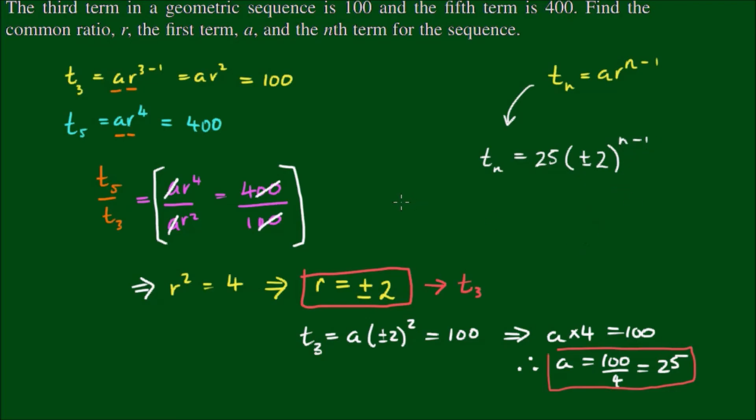Okay so if we take the positive value for r, the sequence will look like 25, the starting number. Multiply that by 2, the second term will be 50. The third term is 100, 200, 400, and so forth.